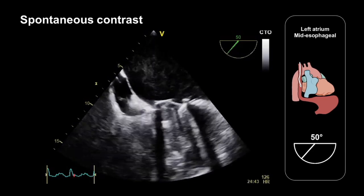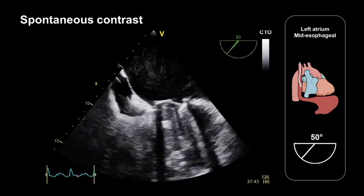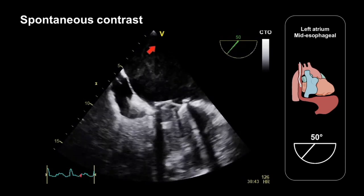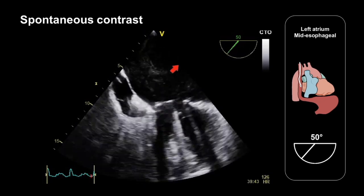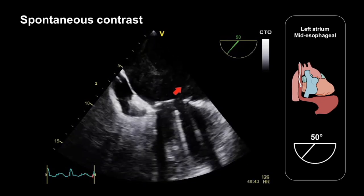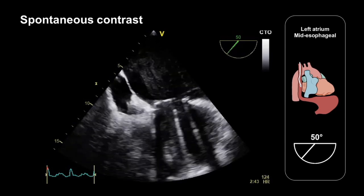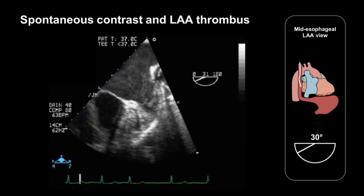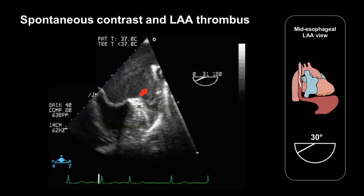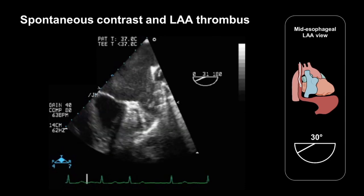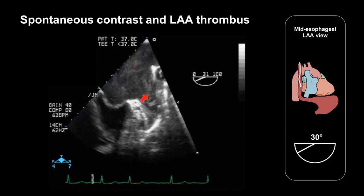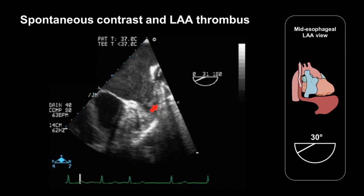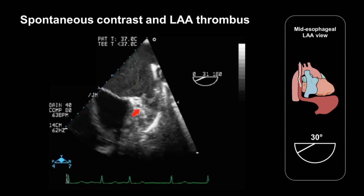In our assessment of the left atrium and its appendage we should always look out for the presence of spontaneous echo contrast — a swirling, smoke-like appearance in the left atrium consistent with a pro-thrombotic state, associated with a higher risk of thromboembolic events. This spontaneous contrast can extend into the left atrial appendage itself, and in this case — a patient with mitral stenosis — we're seeing not just spontaneous echo contrast in the left atrium and appendage but also layers of thrombus which have built up within the appendage itself.